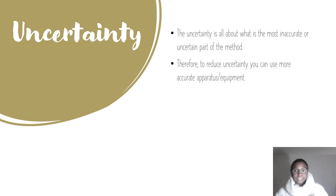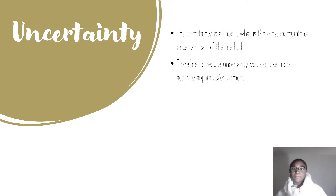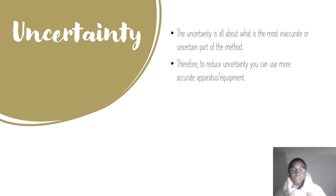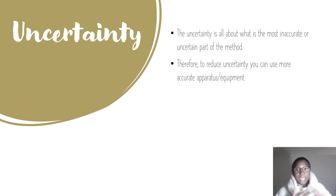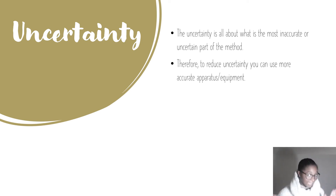Uncertainty is about identifying the most inaccurate or uncertain part of the method. To reduce uncertainty, you can use more accurate equipment or apparatus.